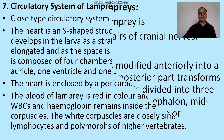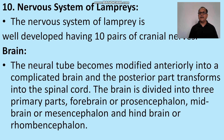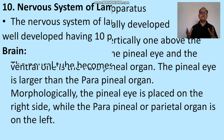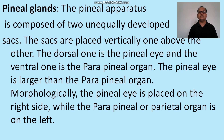Nervous system: it is well developed. The neural tube becomes modified anteriorly into the brain. The brain is divided into three parts: forebrain, midbrain, and hindbrain. Ten pairs of cranial nerves exit from the brain and spread into the body. Spinal nerves exit from the spinal cord and spread throughout the whole body.